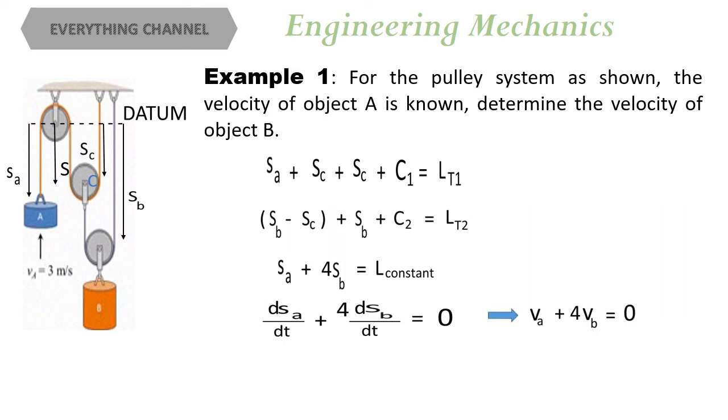Now from this, we will get VA plus 4 times VB equals 0. And from there, we will get VB equals minus VA by 4 equals 0.75 meters per second in the downward direction.